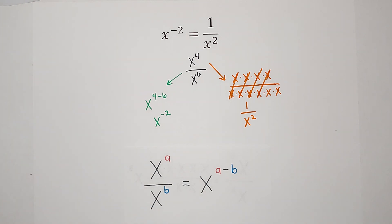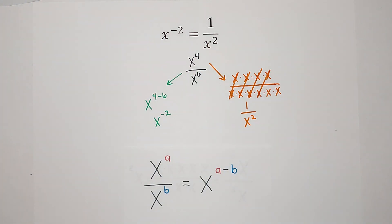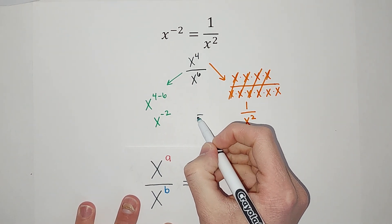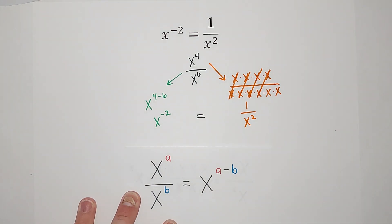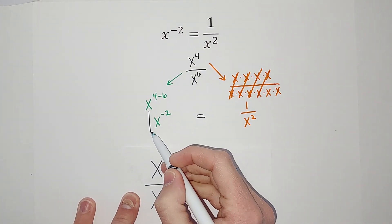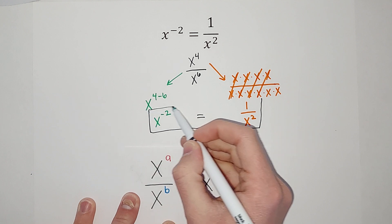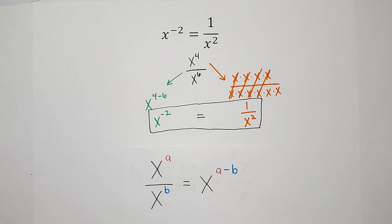Do you see what just happened? I took the same problem, simplified it down two different ways, and got what looks like two different answers — but they're actually the same. It's just a different way of writing it. And we could do this not just with x, but with numbers, whatever we need. So that is why it works.